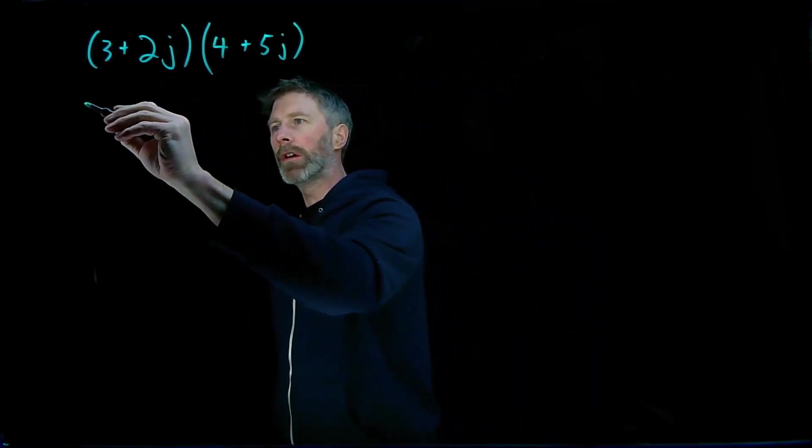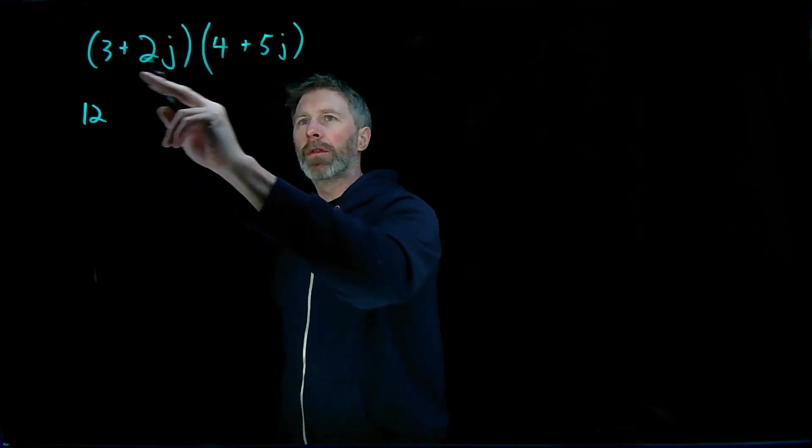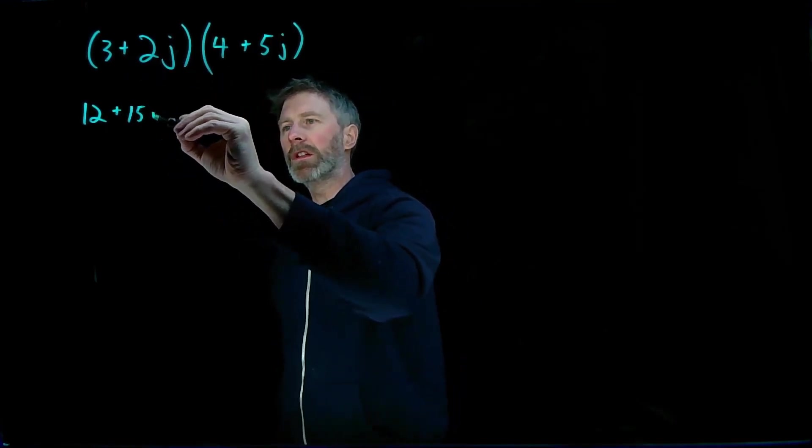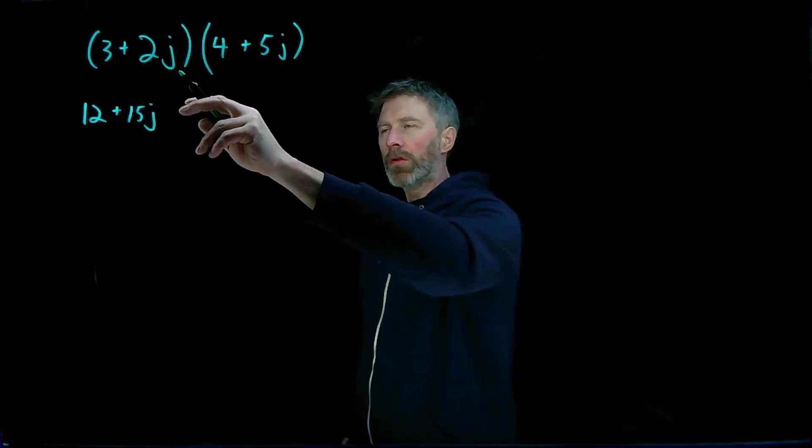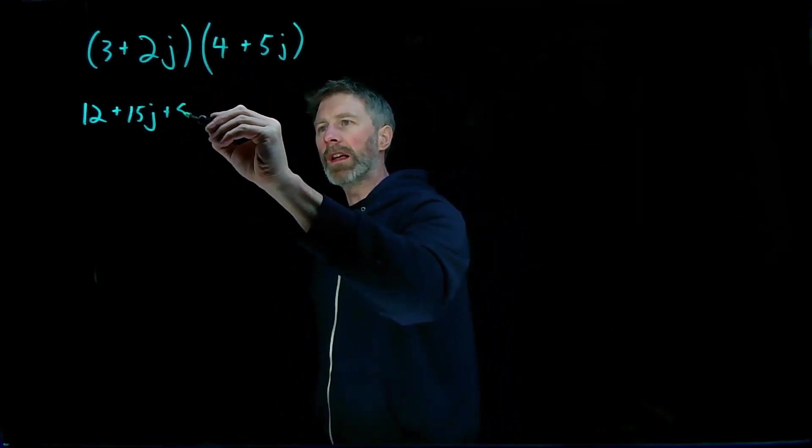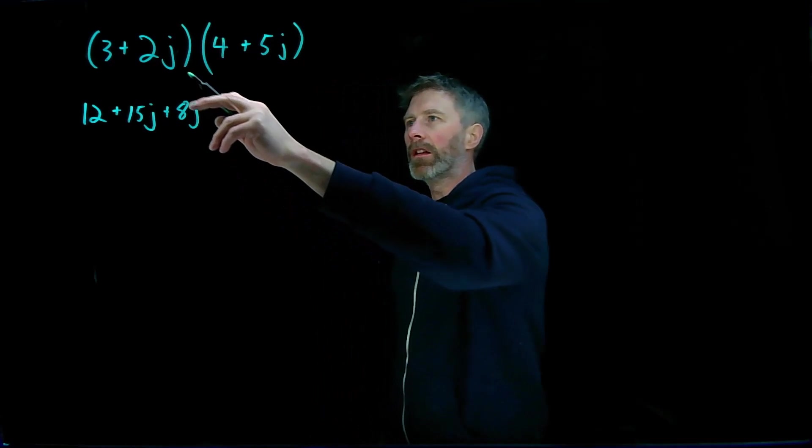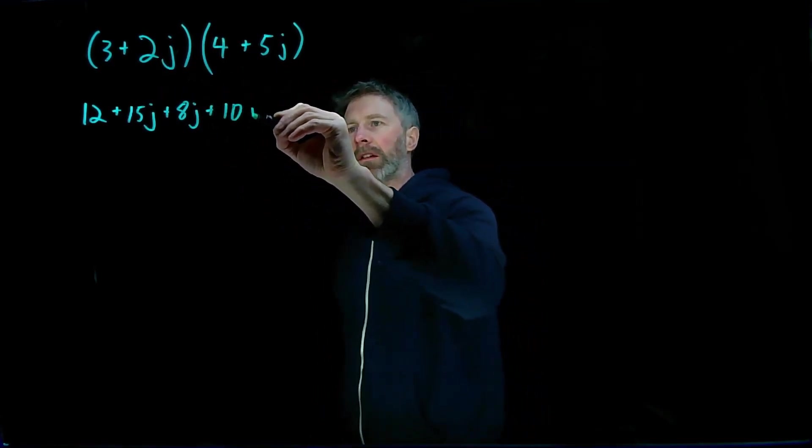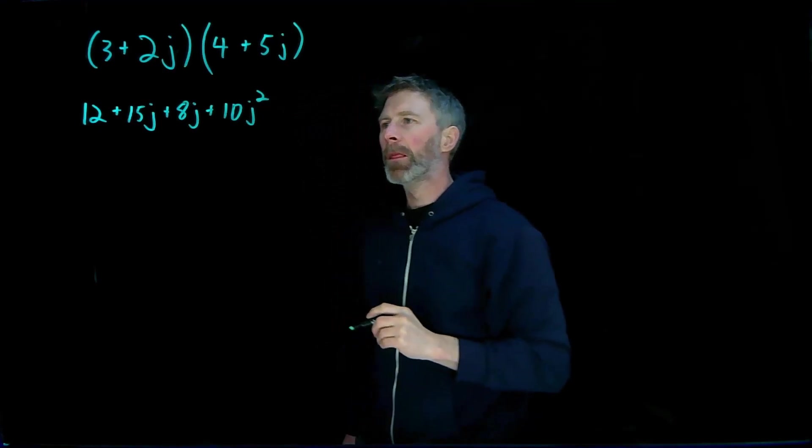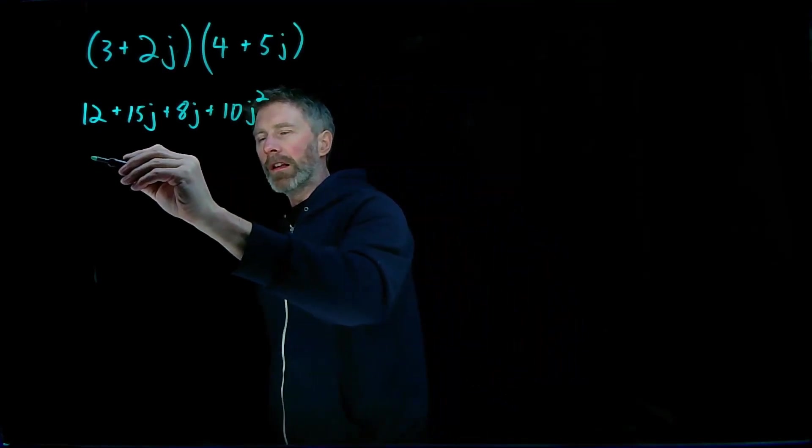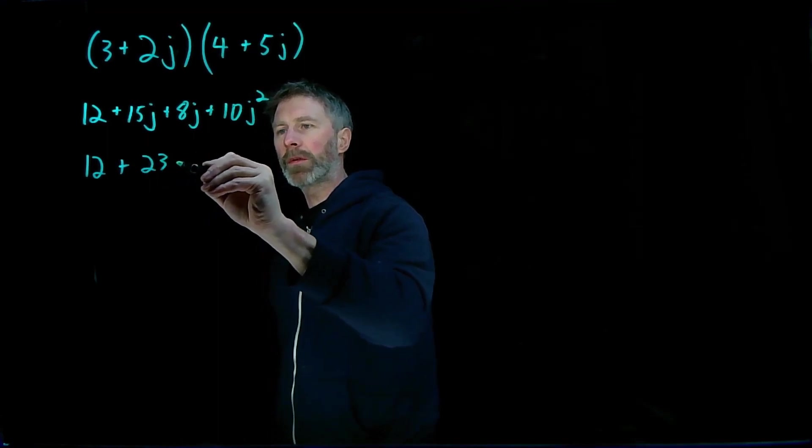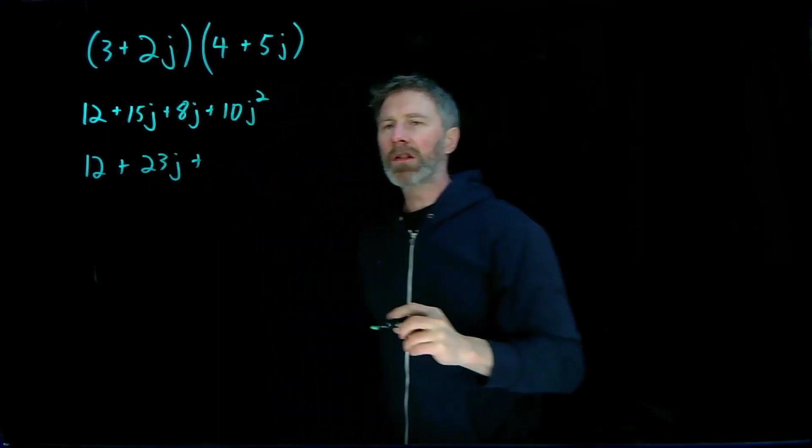So we start off with 3 times 4 gives me 12, 3 times plus 5j gives me plus 15j, 2j times 4 gives me 8j. And finally, 2j times 5j gives me 10j squared. So what I've got is 12 plus 23j plus 10j squared.